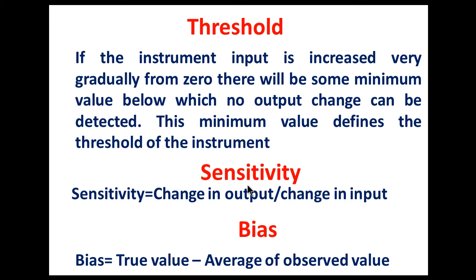Next is sensitivity. Sensitivity is the ratio of the change in output to the change in input. In control systems, there are two types of sensitivity: the ratio of change in output to change in disturbance, or the ratio of change in output to change in input.